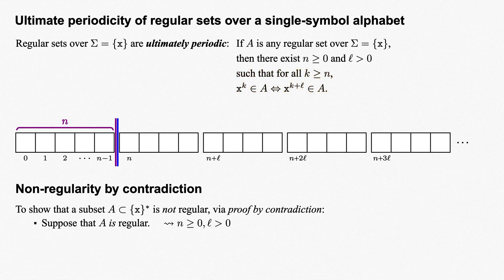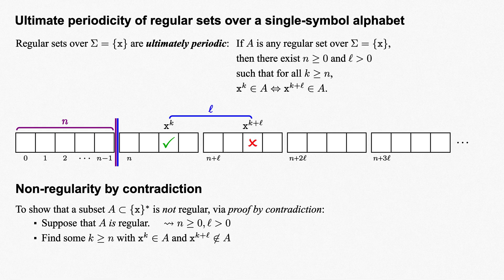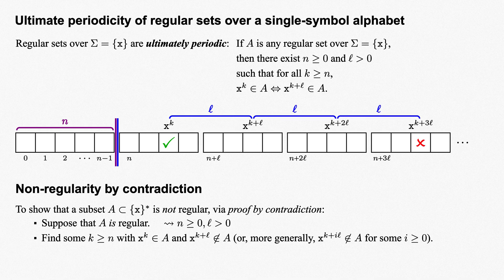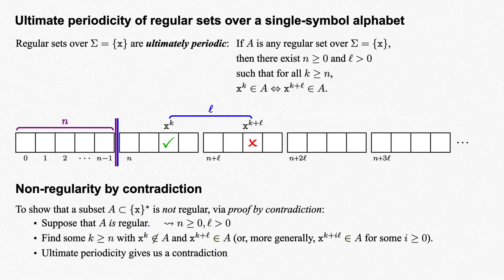The game is to find some power k of x that is in the set A, but such that the power x to the k plus L, or more generally, some power x to the k plus iL for i greater than or equal to 0, is not in A — or technically vice versa. This would contradict ultimate periodicity, and thus would allow us to conclude that our set A is not regular.